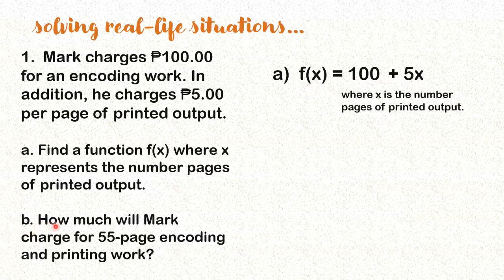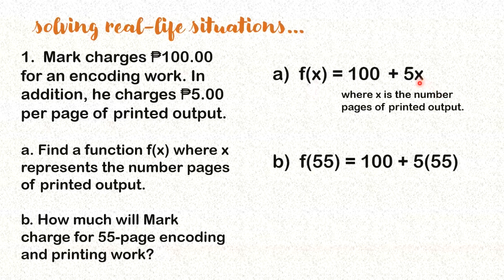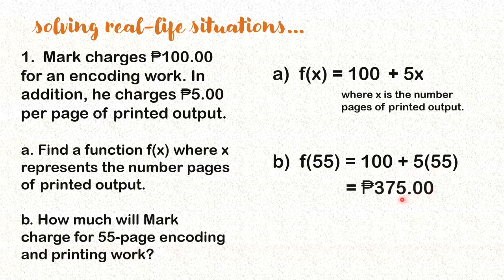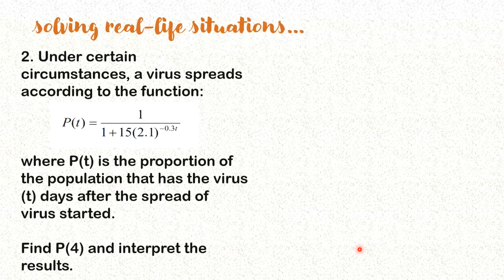Now for letter B, how much will Mark charge for a 55-page encoding and printing work? To answer letter B, all we have to do is find f(55). We substitute 55 here. So we have 100 plus 5 times 55. If you do the math, you will get 375 pesos. What does that mean? A 55-page encoding and printing work costs 375 pesos.